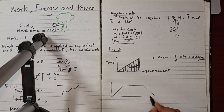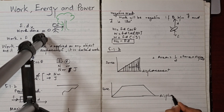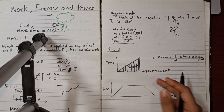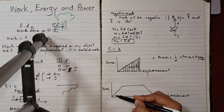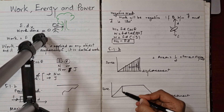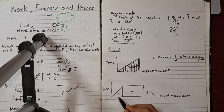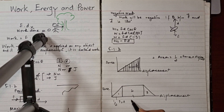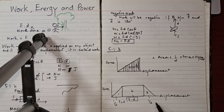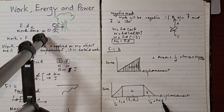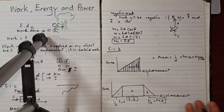For a trapezium shape, I divide it into segments: region 1 (triangle), region 2 (rectangle), and region 3 (triangle). For each: triangle area = ½ × force × displacement; rectangle area = force × displacement. We sum all three areas to get total work done.